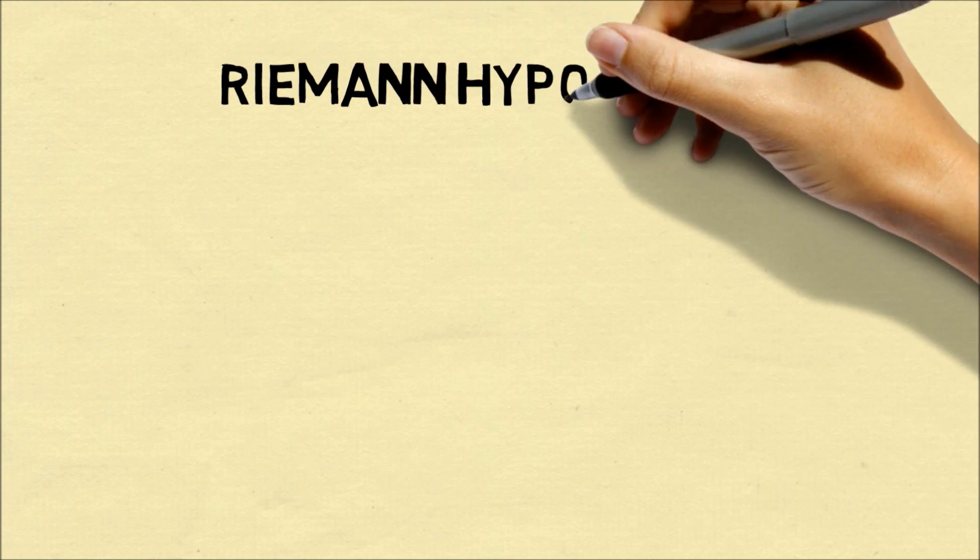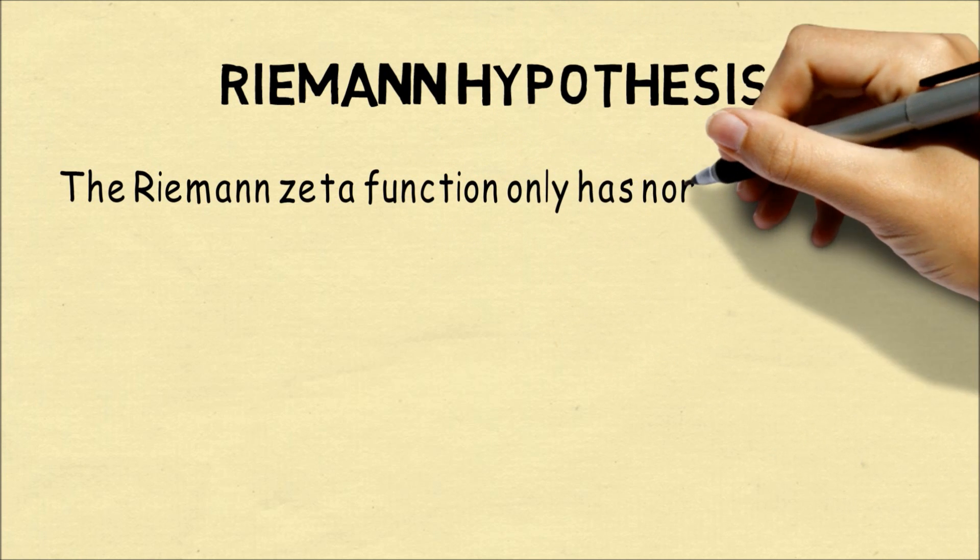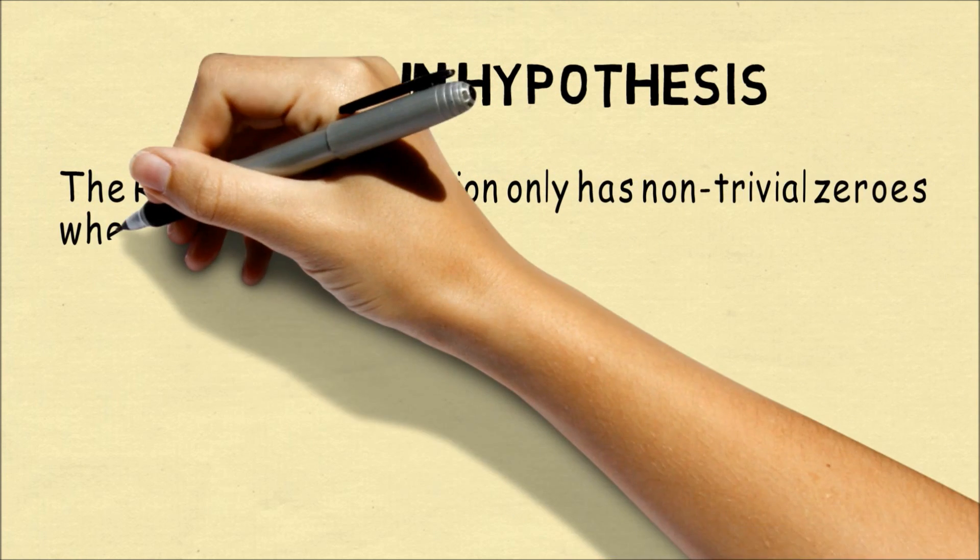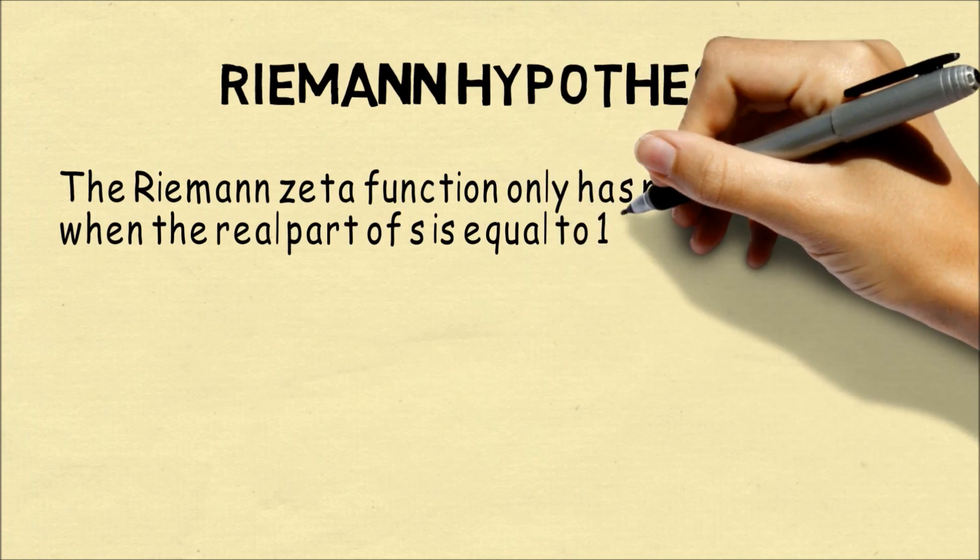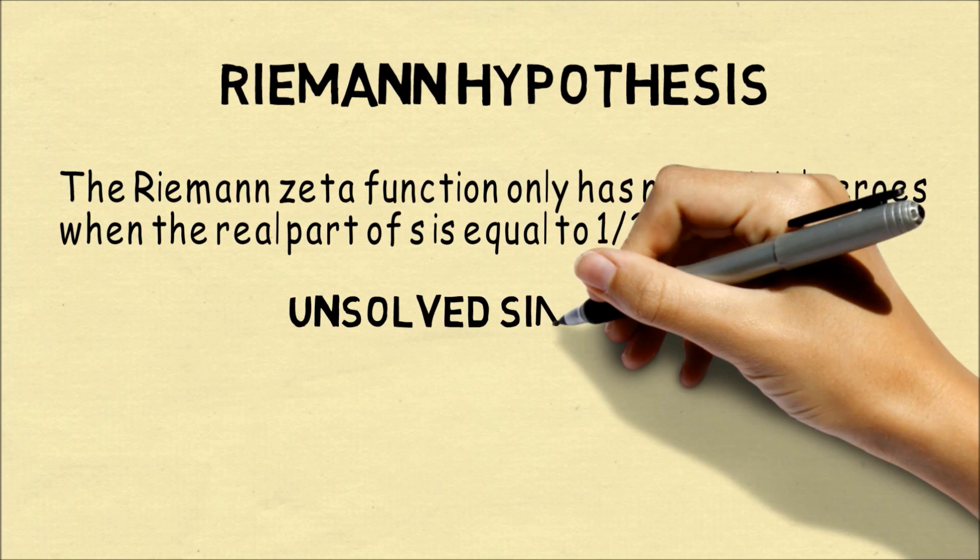The final problem is the Riemann hypothesis. This is actually even a very difficult problem to describe. The hypothesis is that a particular function, when you want to look for solutions, it only happens when the real part of the argument is equal to one half.